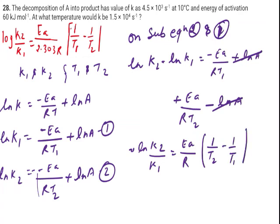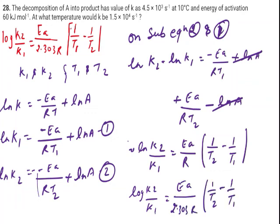Now if I am going to convert this ln into log, I need to multiply 2.303 here. So I am going to get that 2.303 here. So this becomes log K2 upon K1 equals to Ea upon 2.303 R, 1 upon T2 minus 1 upon T1.